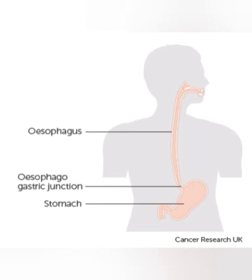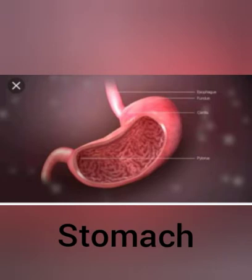Now, what is the function of the oesophagus? The oesophagus is a muscular tube that connects the mouth with the stomach. It carries food from the mouth down to the stomach.